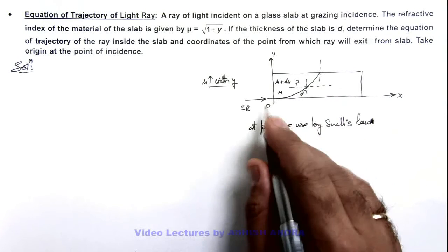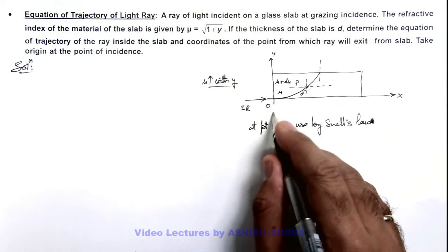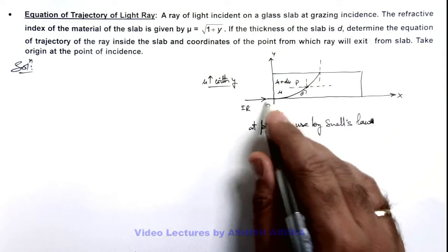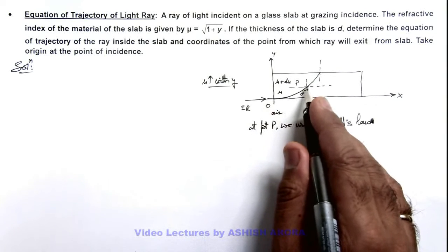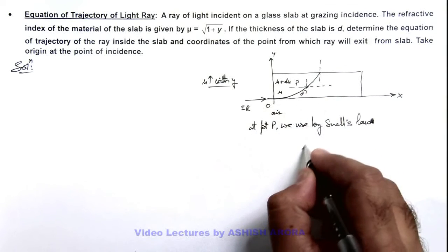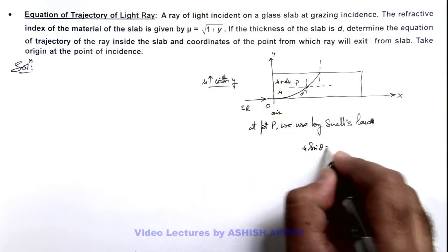Here we can write by Snell's law, this is air, so in air the angle of incidence is 90 degrees. At this point, if refractive index is taken as μ, we can write μ sin θ = 1 × sin 90.